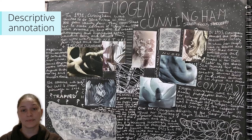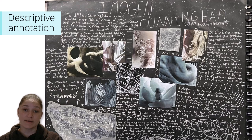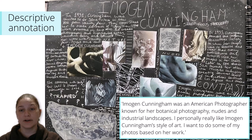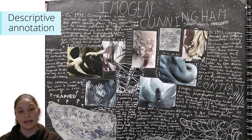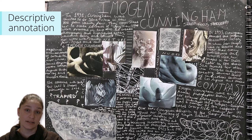The following slides will demonstrate examples of descriptive and purposeful annotation. This is an example of a candidate producing a large amount of descriptive annotation about the American photographer Imogen Cunningham. This is mainly biographical in content with some personal observations. They state: Imogen Cunningham was an American photographer known for her botanical photography, nudes, and industrial landscapes. I personally really like Imogen Cunningham's style of art. I want to do some of my photos based on her work. There is no requirement to produce this much annotation. The candidate could have made a brief statement about the visual characteristics of Imogen Cunningham's work in reference to the images shown, and how the subject matter, photographic processes, and techniques relate to their own investigation and development of ideas.